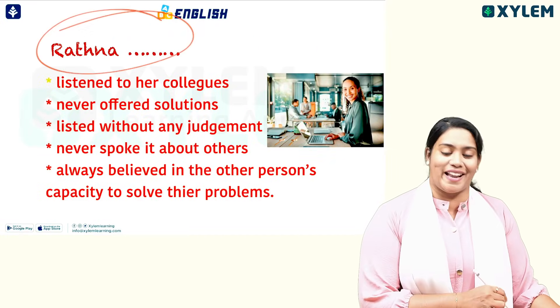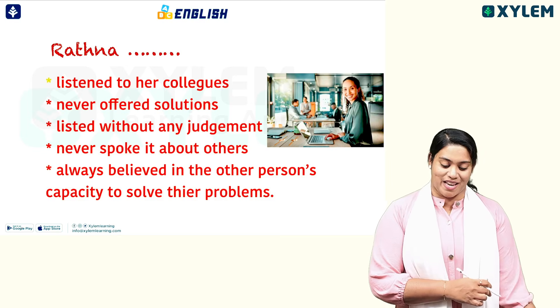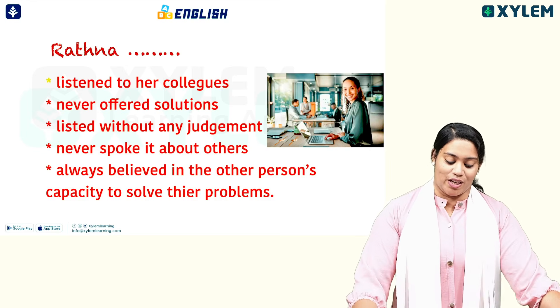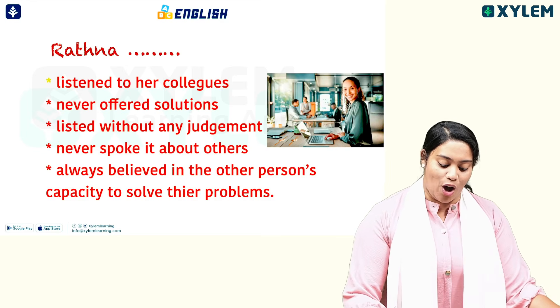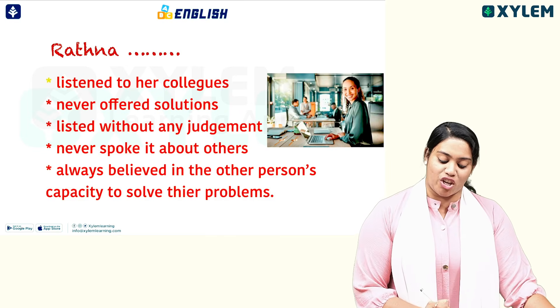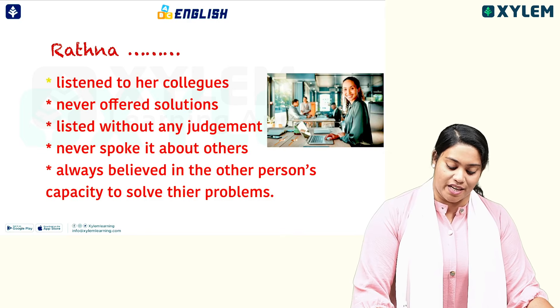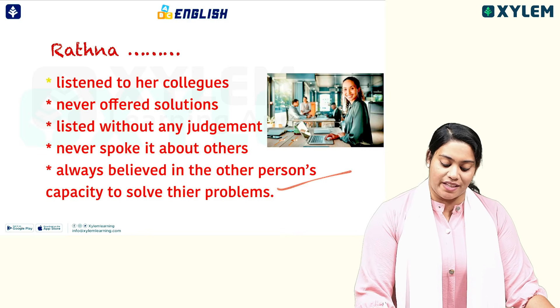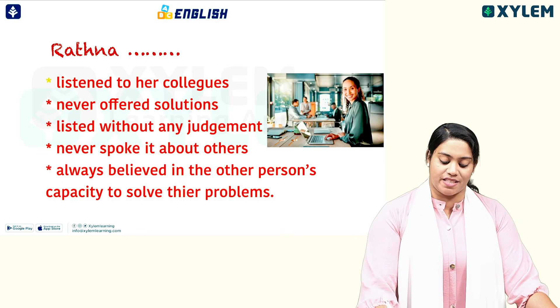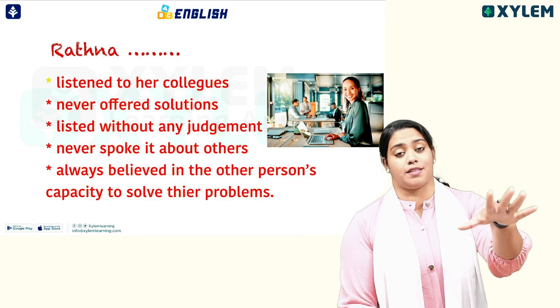Next we have Ratna. The key points about Ratna are: she listened to her colleagues, she never offered solutions, she listened without any judgment, she never spoke about others, and she always believed in the other person's capacity to solve their own problems.